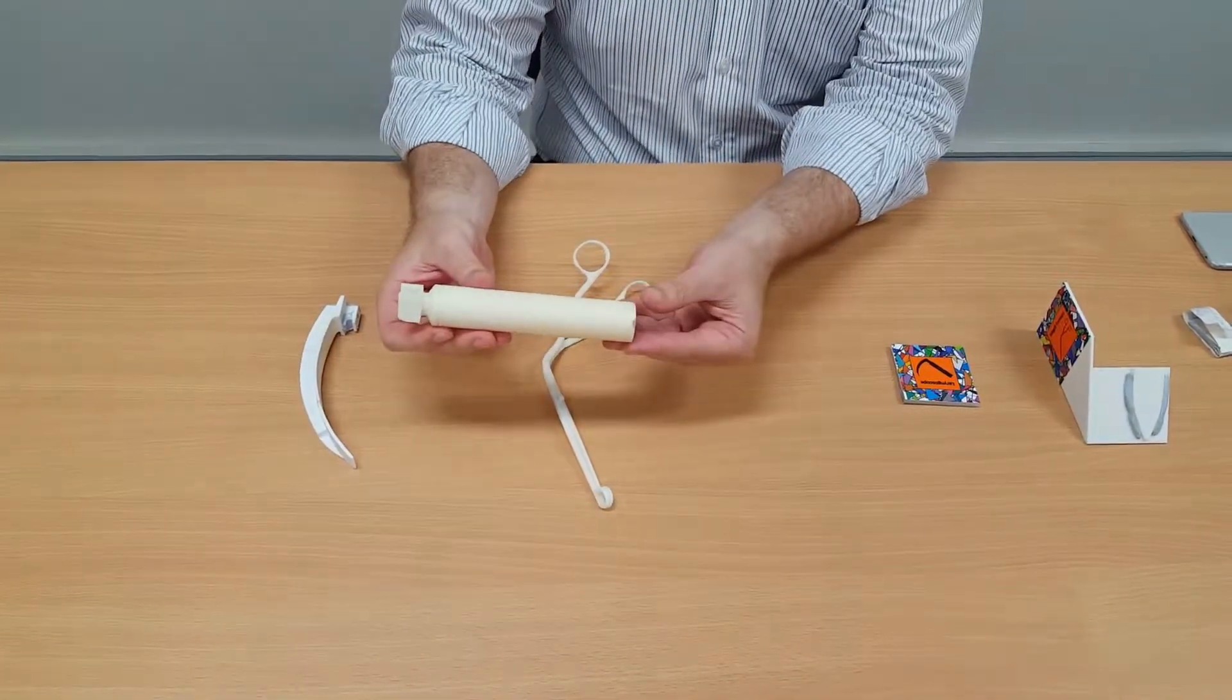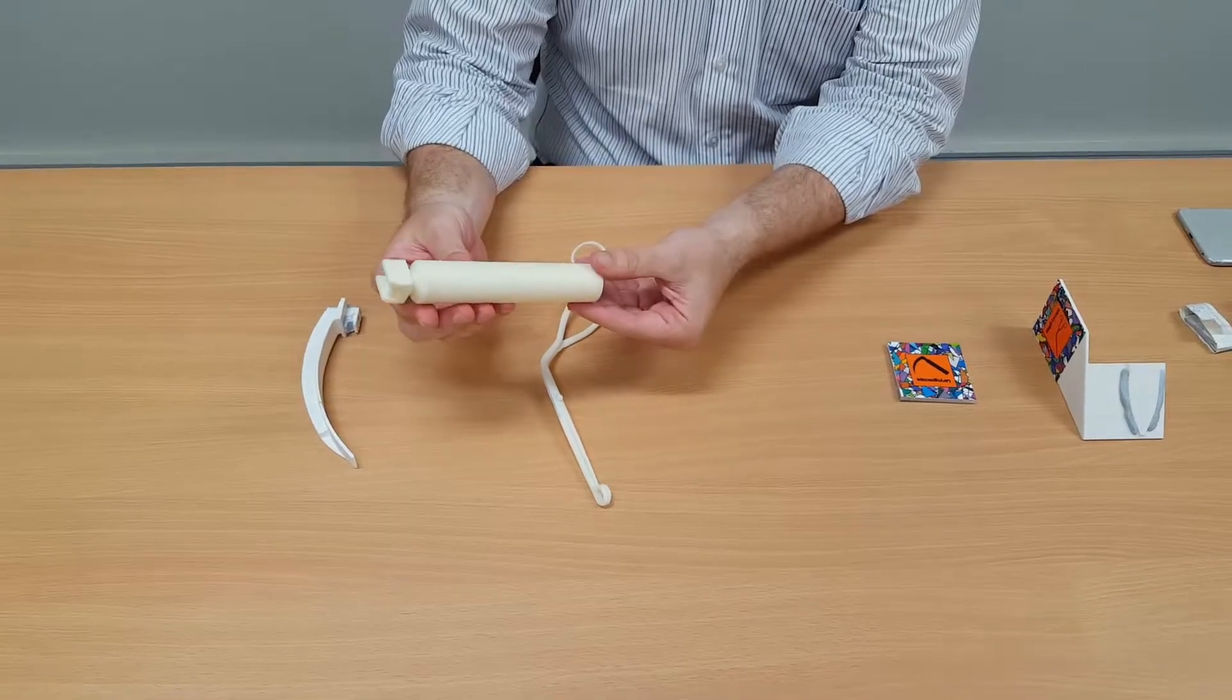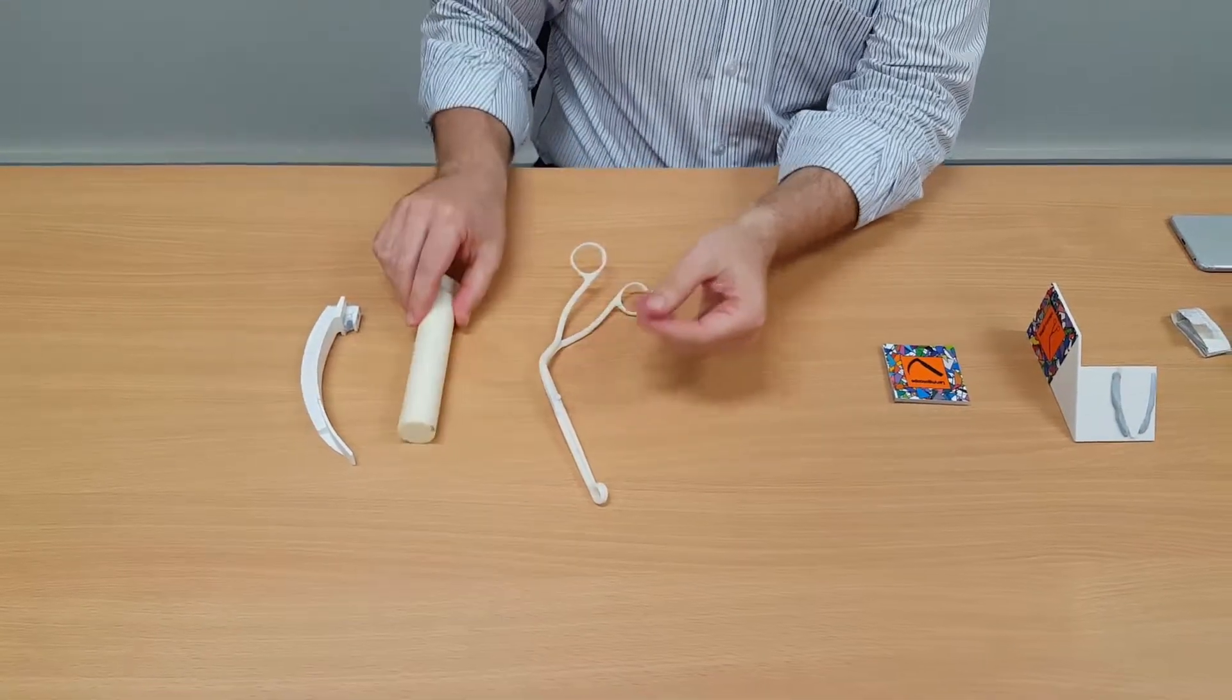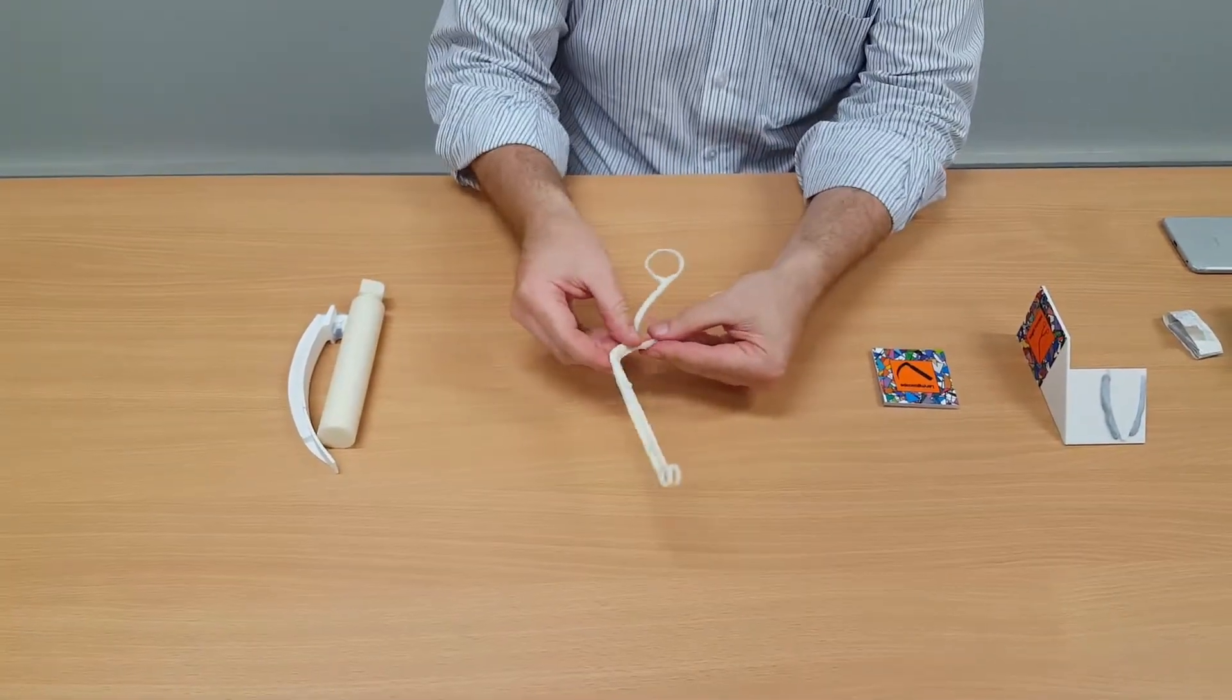We have the laryngoscope hilt. This would simulate the battery pack on the laryngoscope. We have the McGill forceps that you can use.